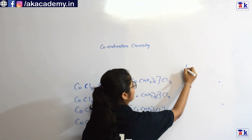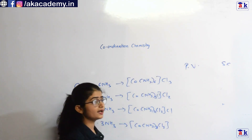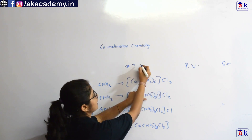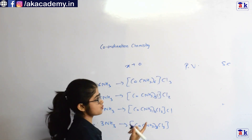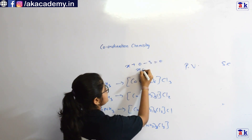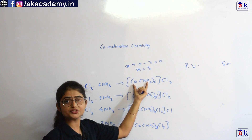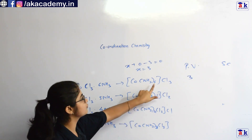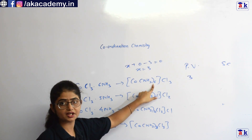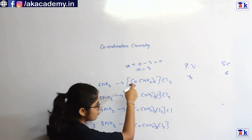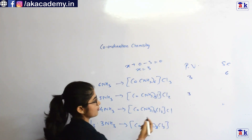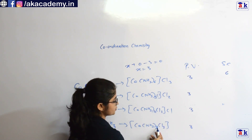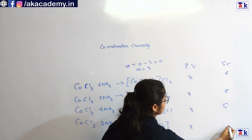Now let us discuss primary and secondary valency. Primary valency is the oxidation number of the central metal atom. For cobalt here, ammonia being a neutral ligand contributes 0, and three chloride ions each contribute −1, giving a total of −3, so the oxidation state X = +3 — meaning primary valency is +3. The coordination number, which is the number of ligands directly attached, is 6, so secondary valency is 6. Analyzing all the cobalt complexes, the primary valency is always +3 and secondary valency is always 6.